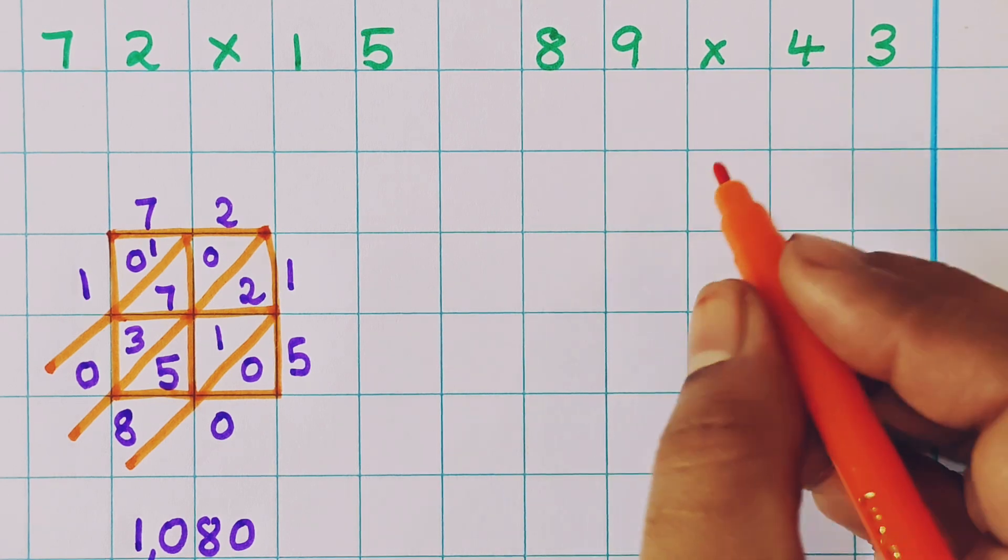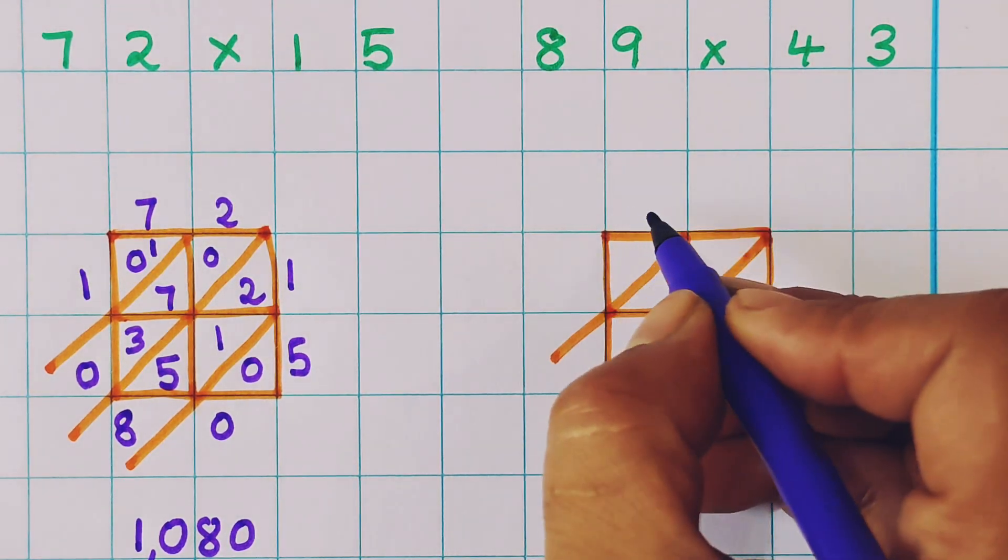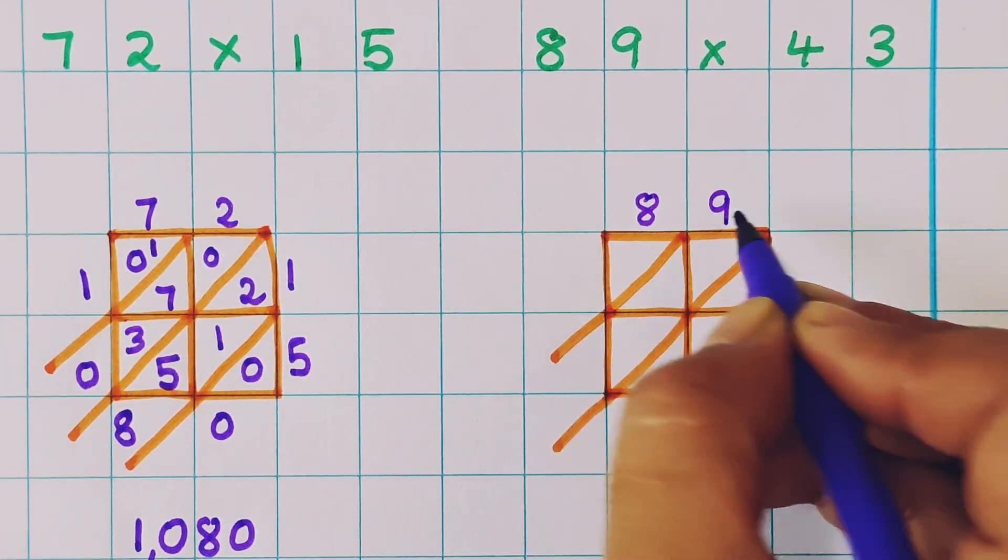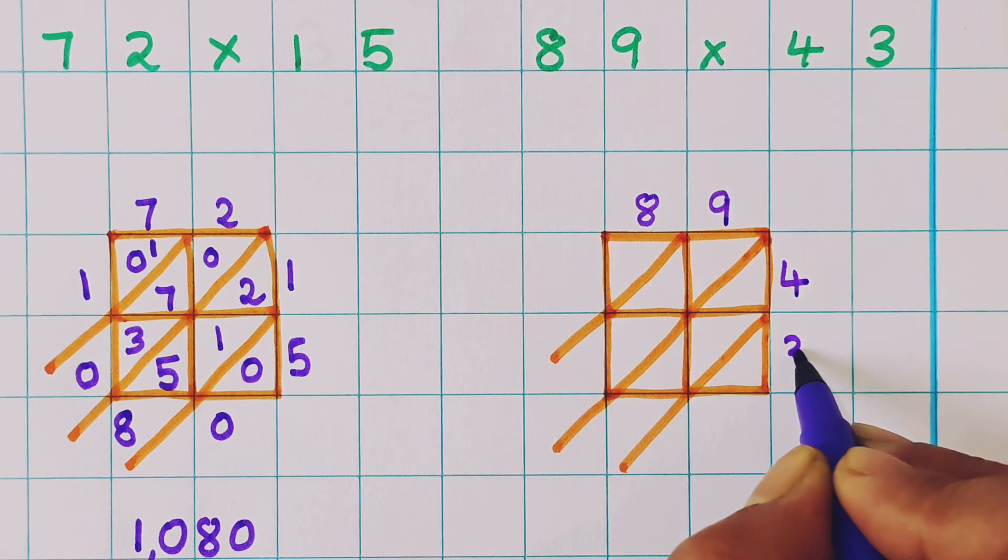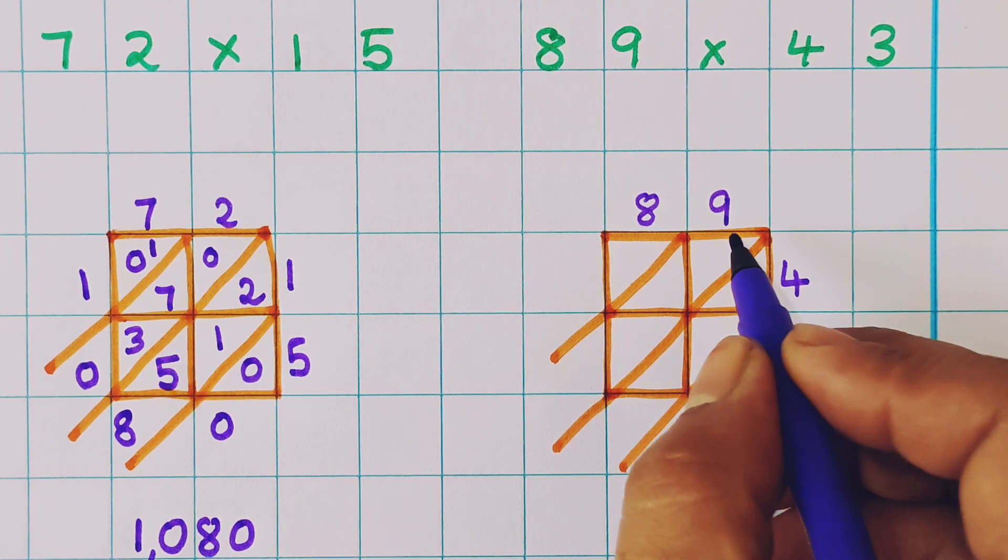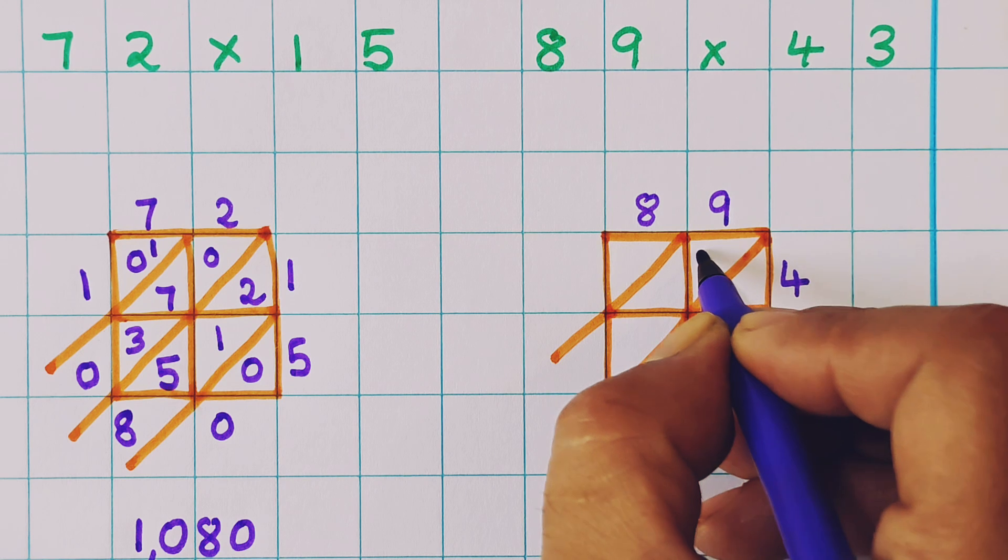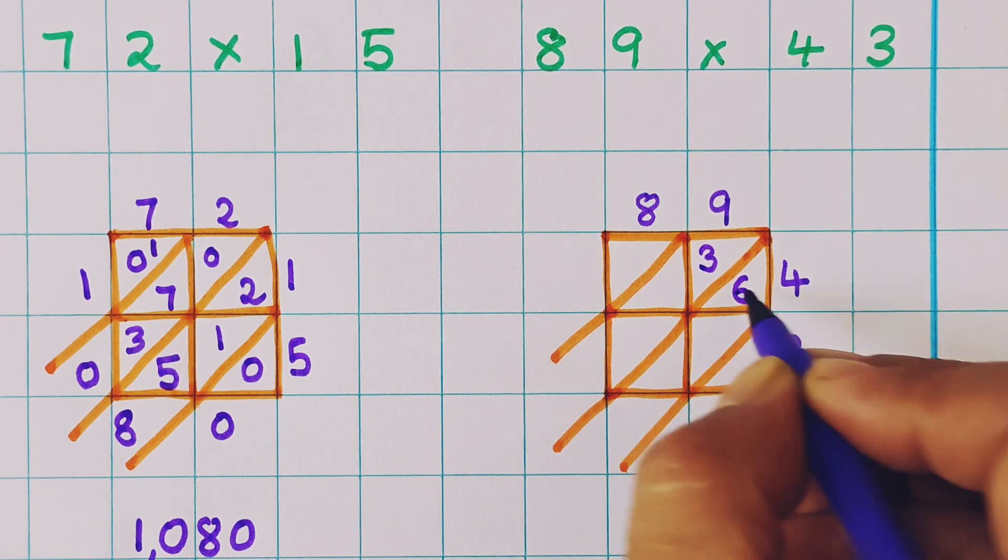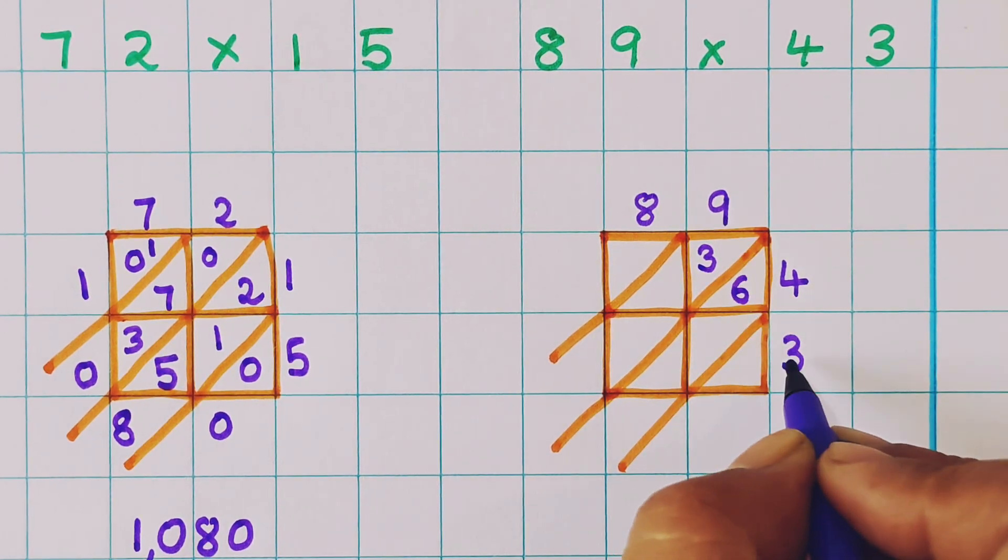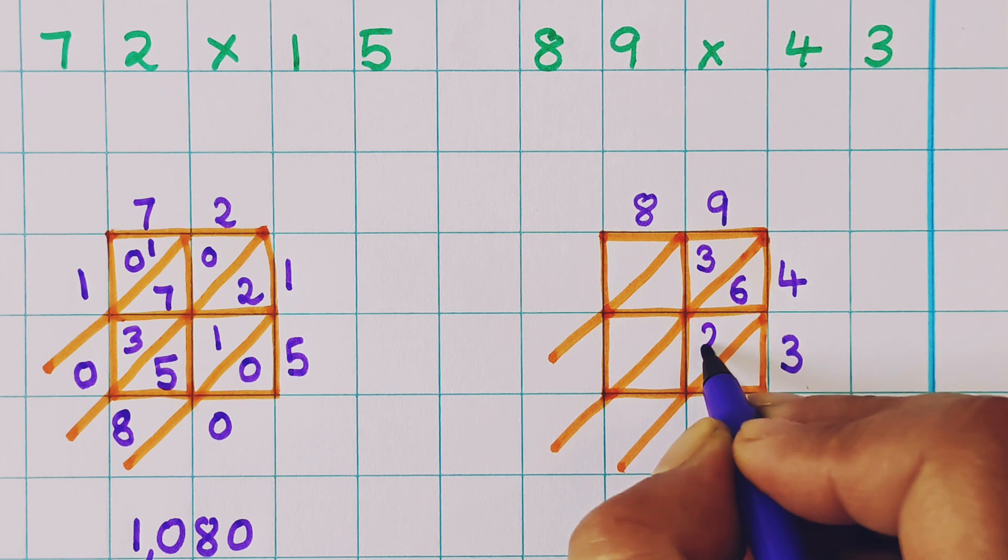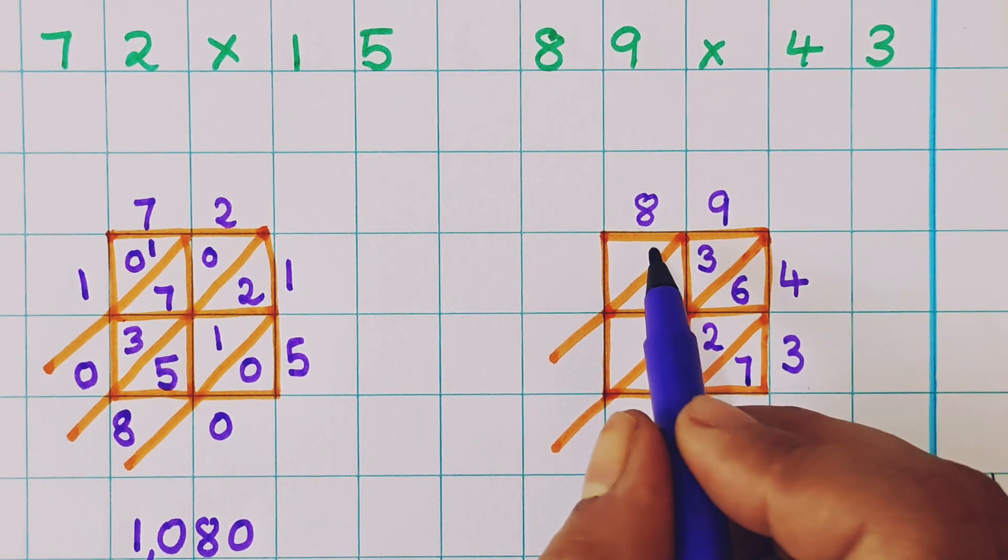89 into 43. Now let's write the numbers. 89 into 43. Now let's do the multiplication. 9 fours are 36. So here I will write 3 and here 6. 9 threes are 27. So 2, 7.